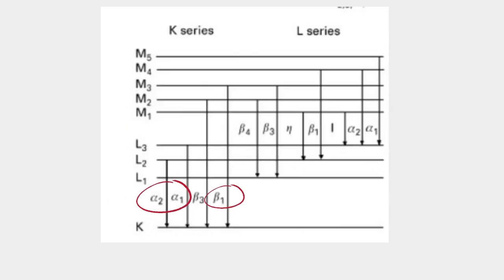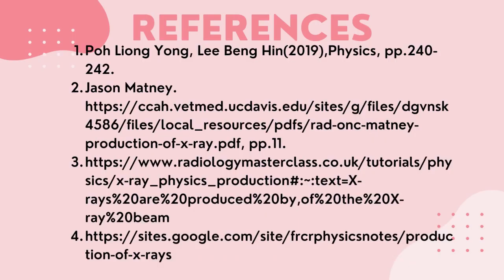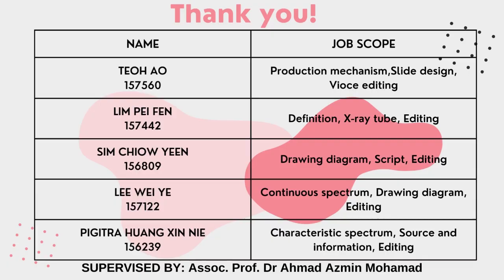K alpha 1, K alpha 2, and K beta 1 are the strongest among the K series, and thus they are widely used for x-ray diffraction. These are the references used when producing this video. Thank you for your attention.